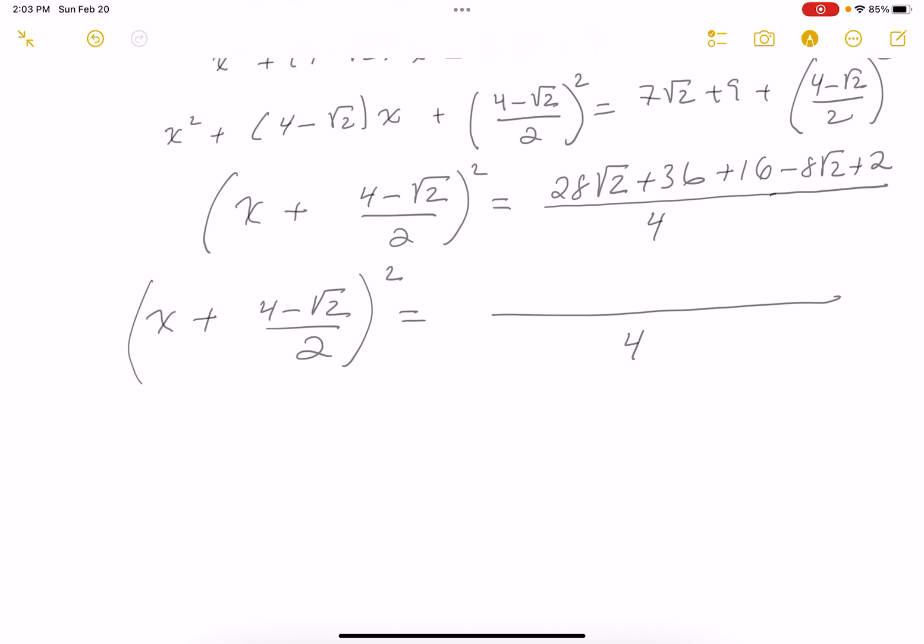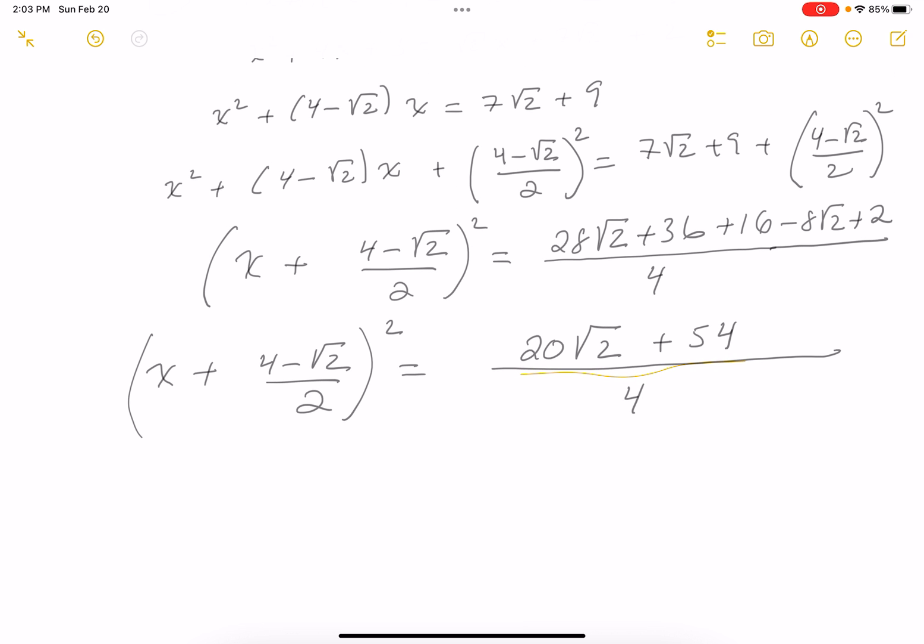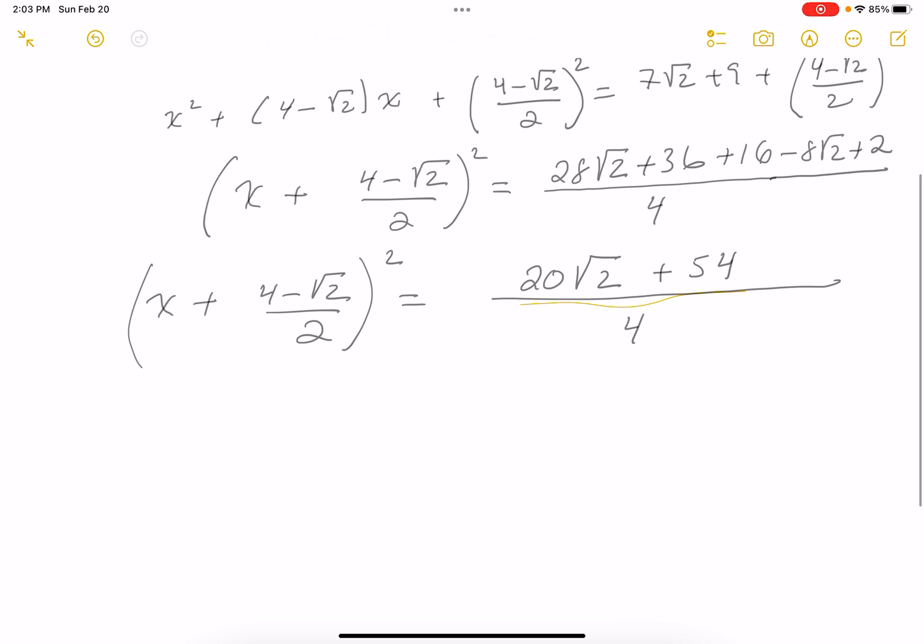And then what are you going to get? I've got to do that now. I've got to square that thing. So that's going to be plus 16. And let's see, you would get minus 8 root 2 plus 2. Don't despair yet. I've got to go forward. This is going to be X plus 4 minus root 2 over 2 squared equals. This is going to be a 4. I'm looking at the top and I see 20 root 2, and 36, 46, 52, 54.